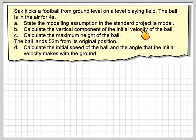State the modeling assumption in the standard projectile model. Calculate the vertical component of the initial velocity of the ball and calculate the maximum height of the ball. The ball lands 52 metres from its original position. Calculate the initial speed of the ball and the angle that the initial velocity makes with the ground.